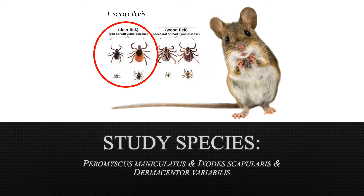The deer tick is named so for feeding primarily on white-tailed deer as adults, though they are quite the generalists and have been known to feed from over 100 different host species. They are arguably the most medically important tick species. Known as the vector of Lyme disease, they can transmit this bacteria to their hosts, which can include humans.